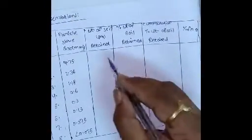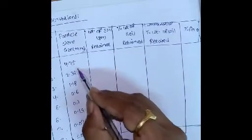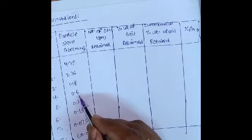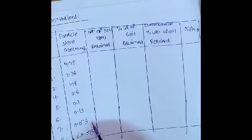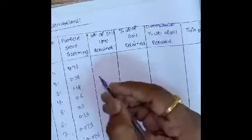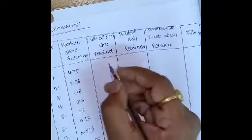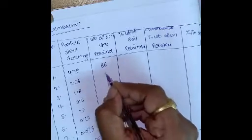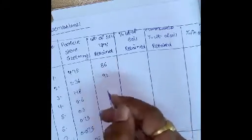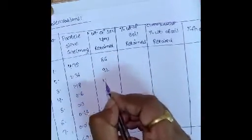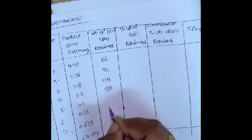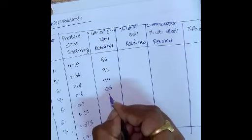Coming to the sieve analysis calculations: we have done the experiment and taken the soils which are retained on 4.75 mm, 2.36 mm, 1.18 mm, 600 micron, 300 micron, 150 micron, 75 micron sieves and in the pan. The soil retained on 4.75 mm sieve is 86 grams, on 2.36 mm is 92 grams, on 1.18 mm is 114 grams, and on 300–315 micron sieves is 36 grams.